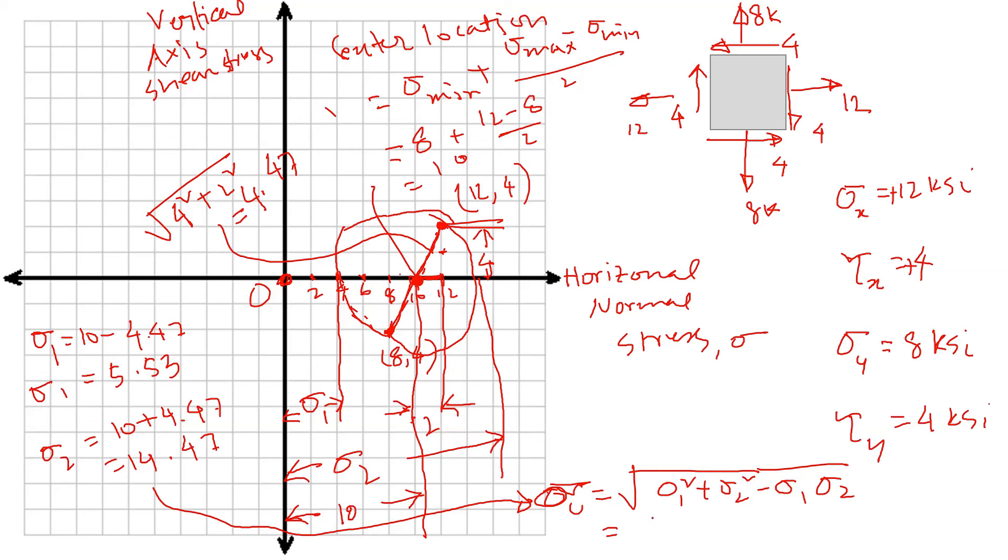5.53 squared plus 14.47 squared minus 5.53 times 14.47, and the square root of all of this. And I have calculated this number to be 12.65. So the von Mises stress, normal stress, is 12 point—σ_v is 12.65 ksi.